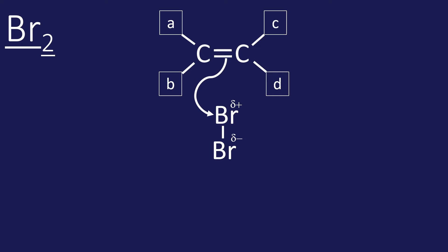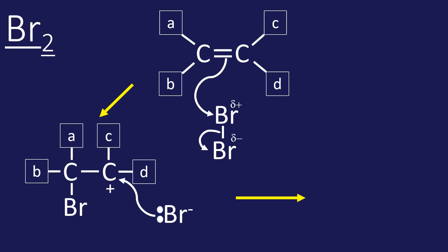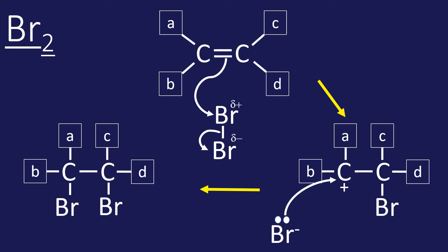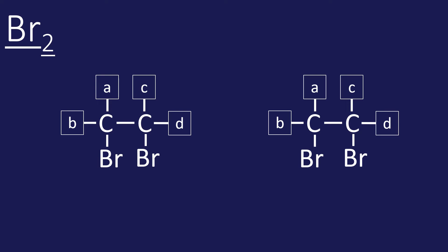Then we get the same mechanism. Look, the pi bond attacks the delta positive bromine, then that bond breaks, and then we get our first product. There you go, you get your dibromo substance. It is possible that you will get both intermediates, but the truth is they both just make the same product. So there's your mixture, there's your two different products, but they're not different at all.